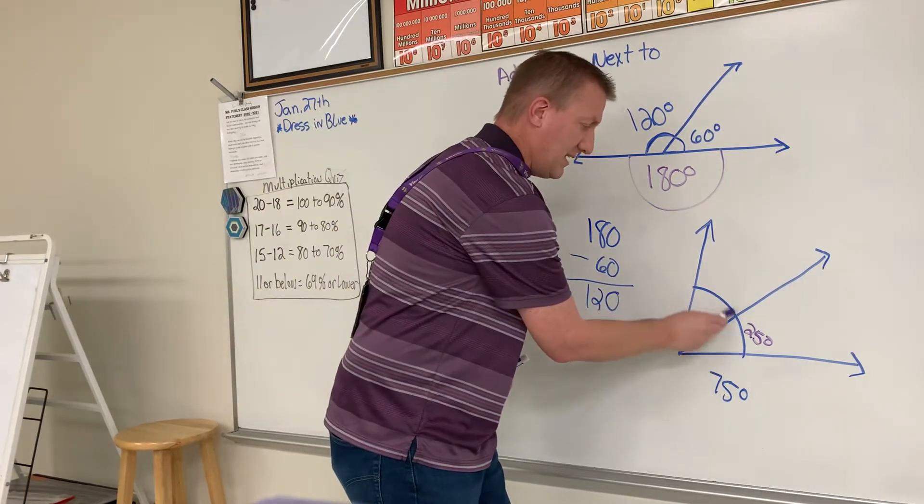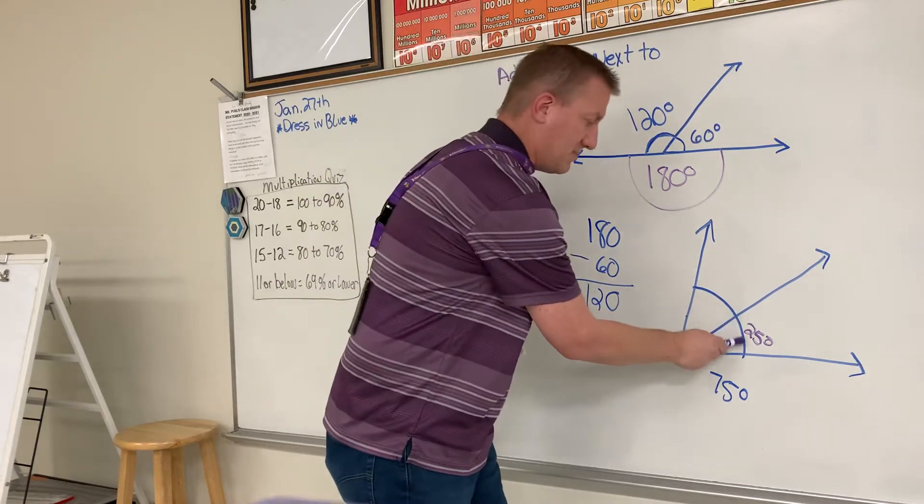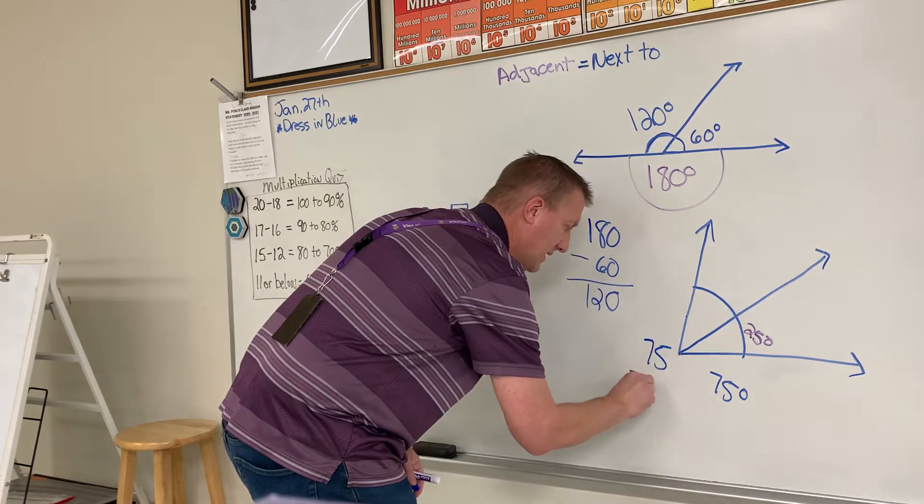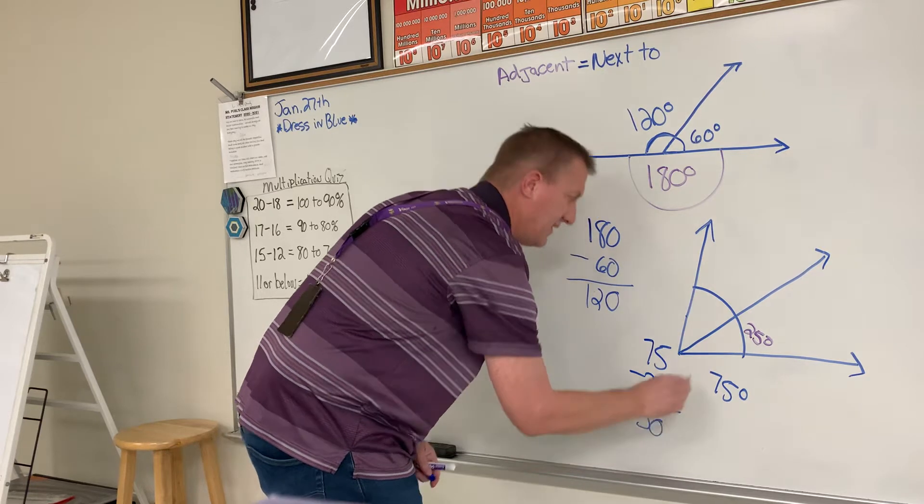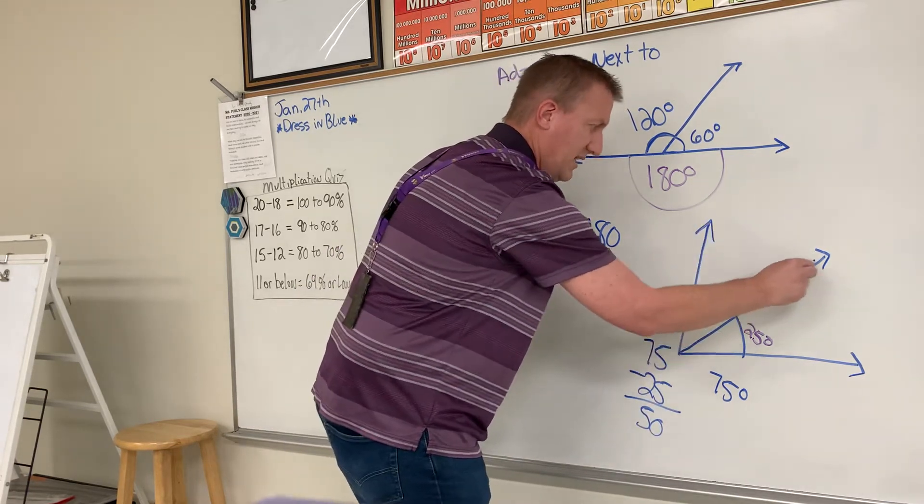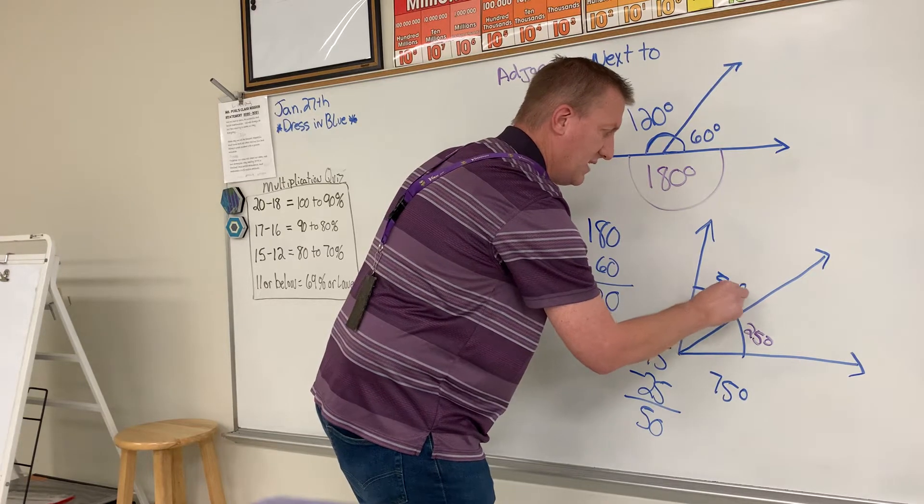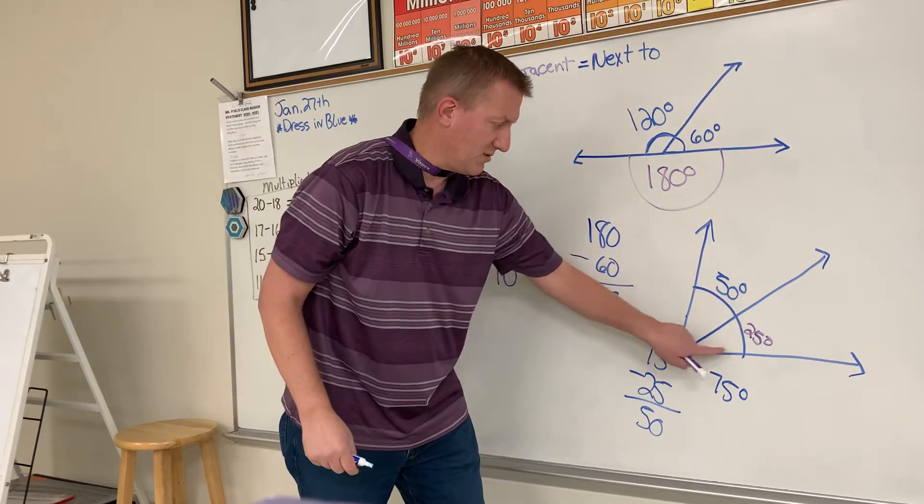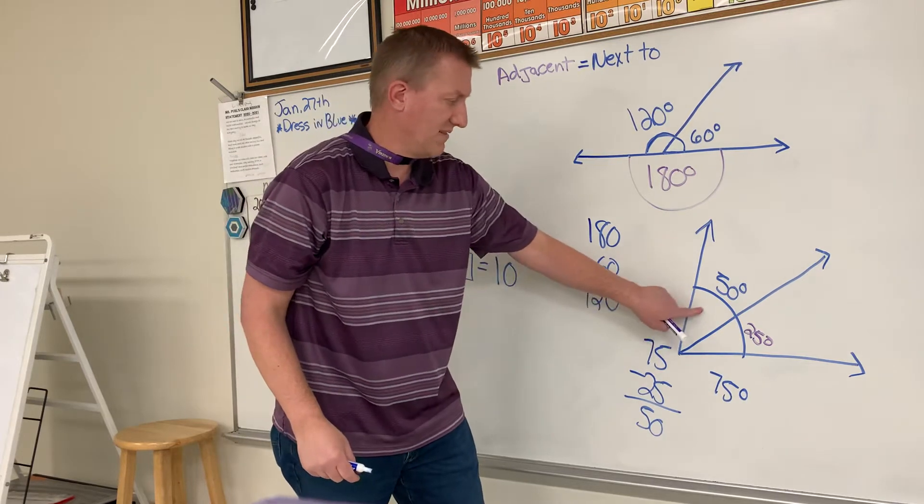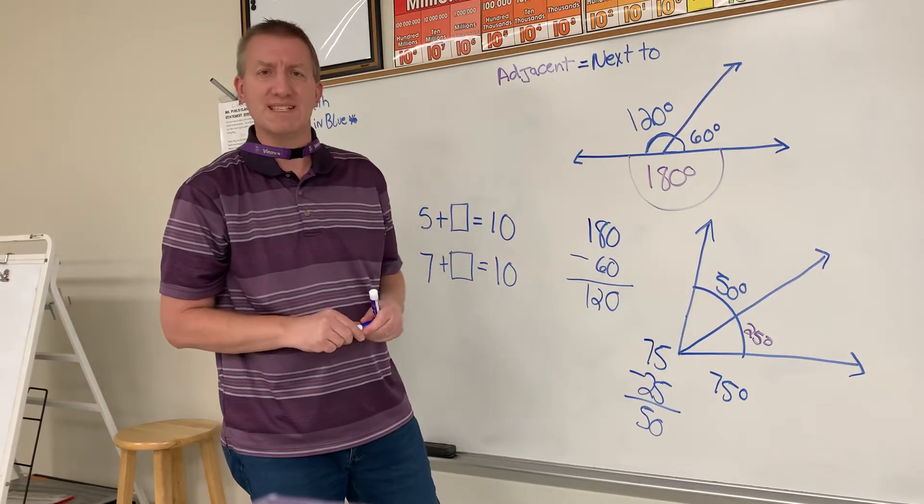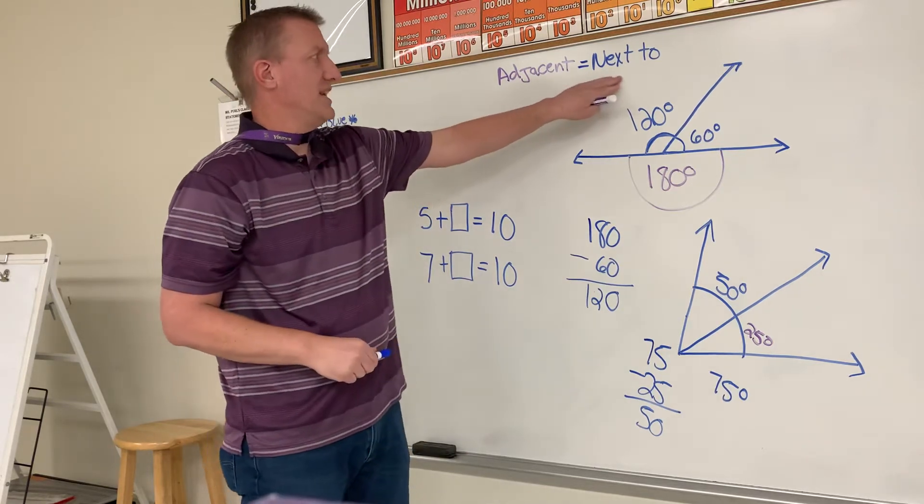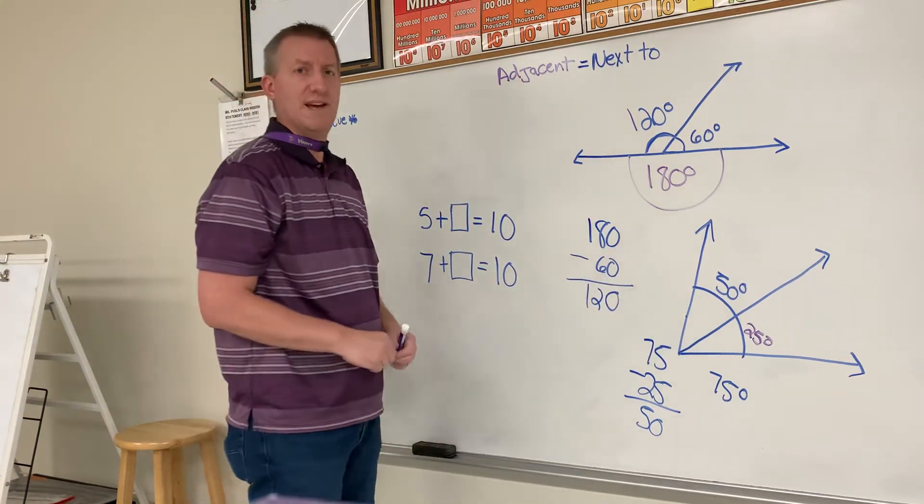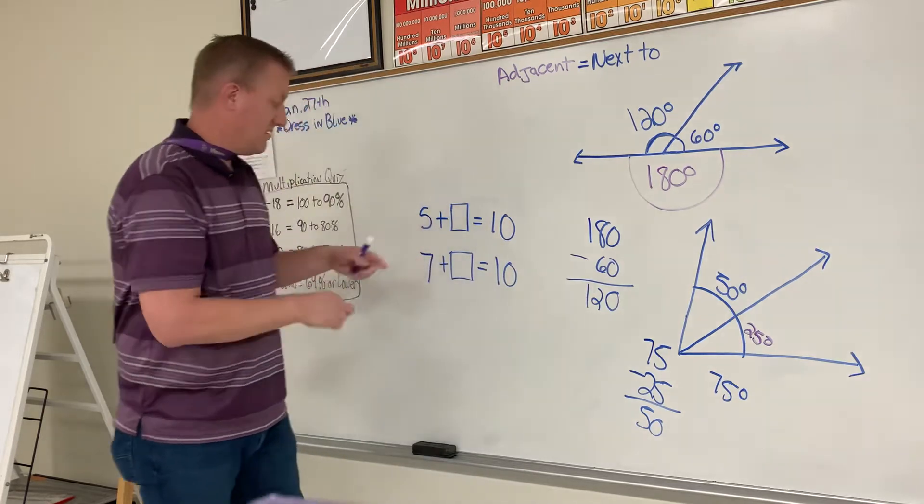Well, if this big angle is 75 and this smaller part is 25, then you could do 75 minus 25, and that would equal 50. So this angle right here would be 50 degrees. So you take the big angle, subtract out this partial part of that angle, 25, and that would be 50 degrees left over. Okay, so that's adjacent angles, finding adjacent angles.